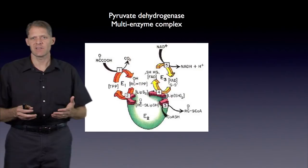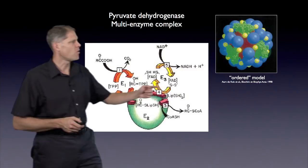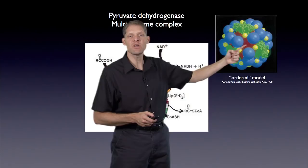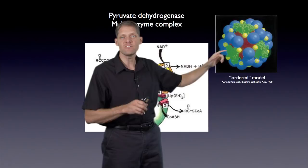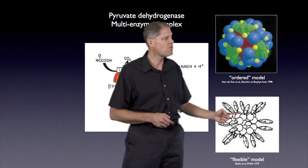There were two competing models: the 'ordered model,' in which the E2 enzyme forms a cubic core and E1s and E3s decorate its faces in an ordered pattern; and the 'flexible model,' which posits that E2 forms the core but E1s and E3s are flexibly tethered along the outside.